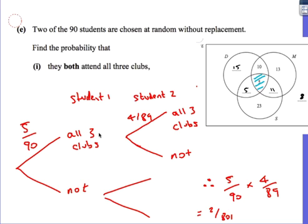However, if you chose a student, then there would only be 89 students left, and there would only be four students left who actually attended all three clubs. So the probability that they both attend all three clubs, you're going to do this route in the tree diagram and then times by this there. So it's going to be five over 90 times by four out of 89, which is going to give you two out of 801 once you simplify.